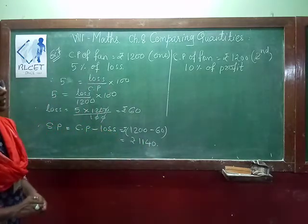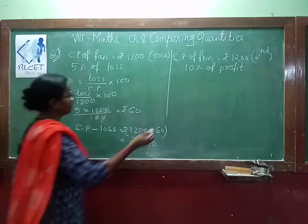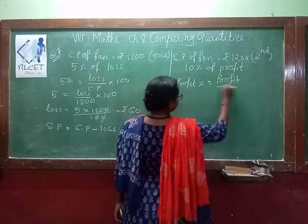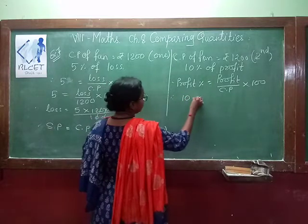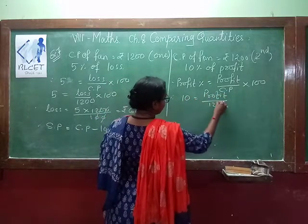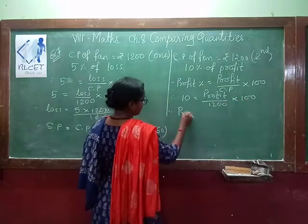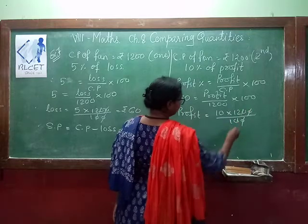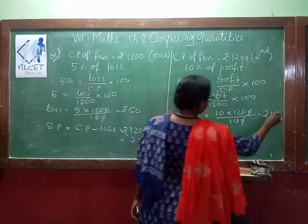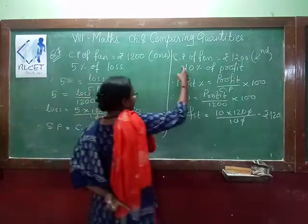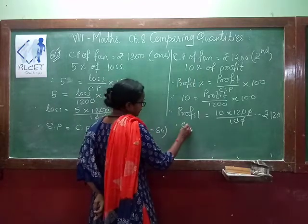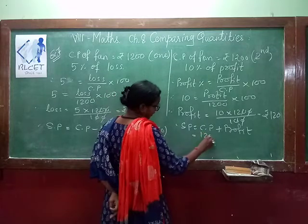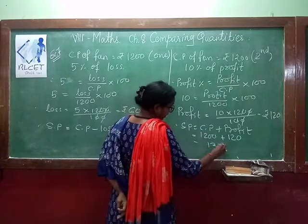For the second fan, cost price is Rs.1200 and profit is 10%. Profit percent = (Profit ÷ Cost Price) × 100. So profit in Rs. = 10 × Rs.1200 ÷ 100 = Rs.120. Therefore, selling price = cost price + profit = Rs.1200 + Rs.120 = Rs.1320.